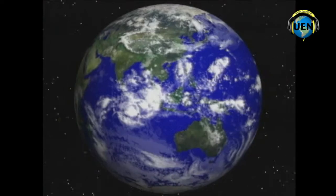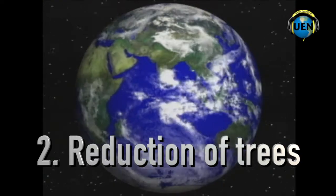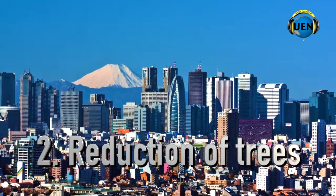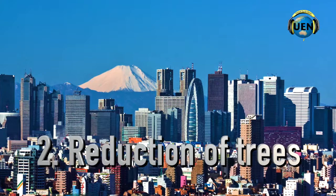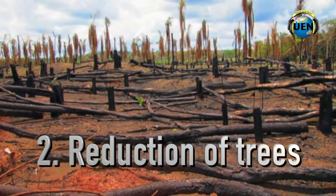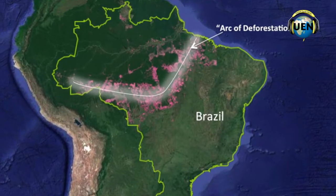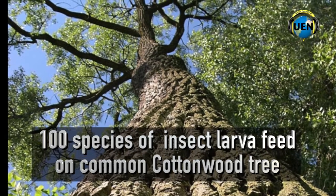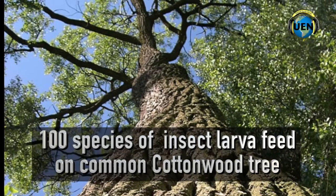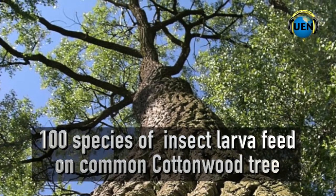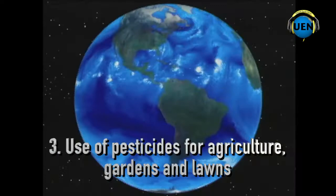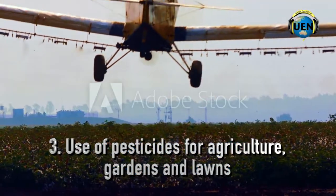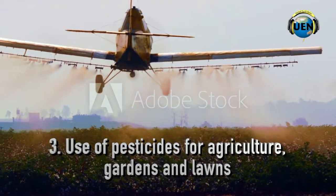A second cause is the reduction of trees for more houses, driveways, lawns, parking lots, and large buildings, which reduces the food sources of thousands of insect larvae. For example, more than 100 species of insect larvae feed on the common cottonwood tree alone. Another cause is the use of pesticides for agriculture, which probably reduces the insects that used to hit your windshield.